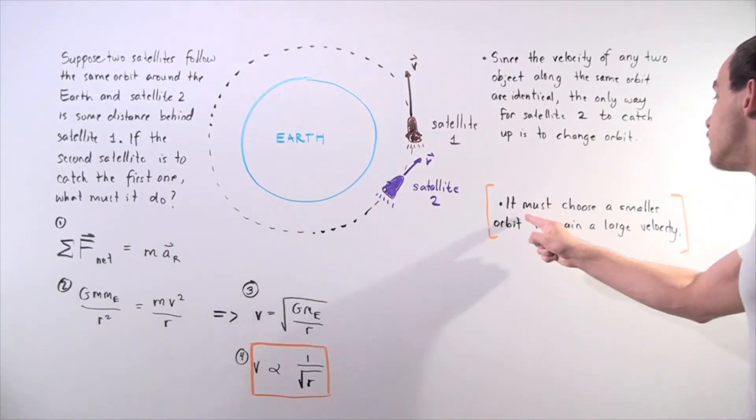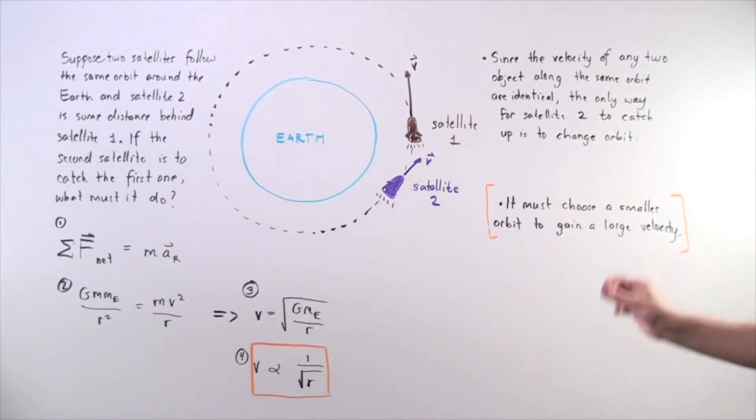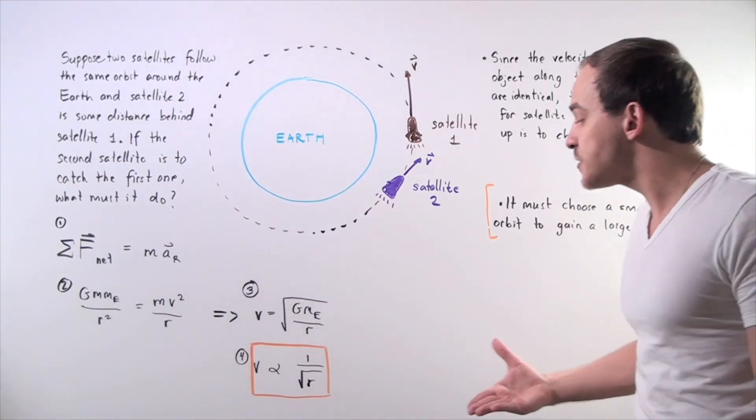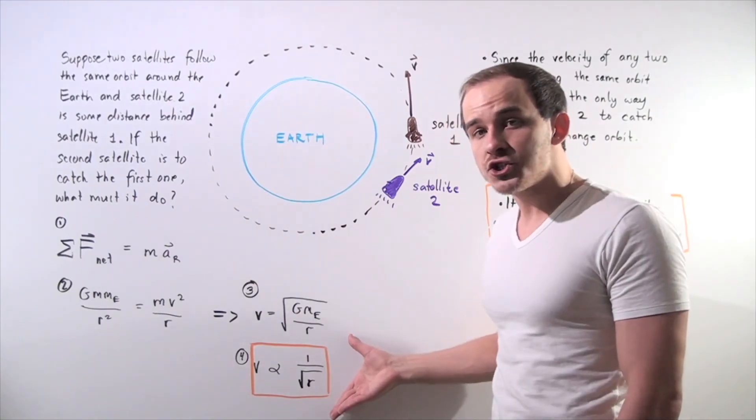So satellite 2 must choose a smaller orbit to gain a larger velocity, as per the proportion derived above.